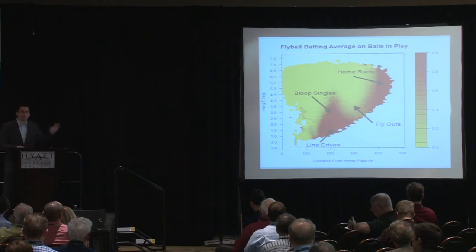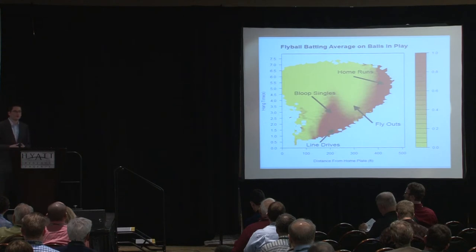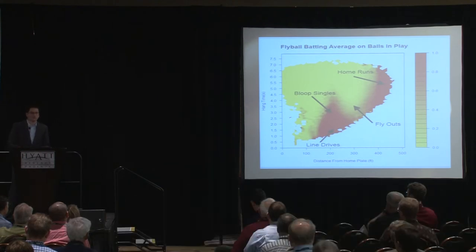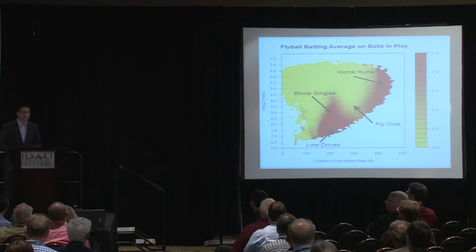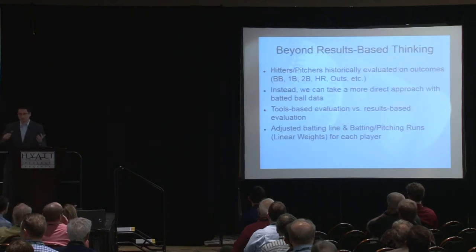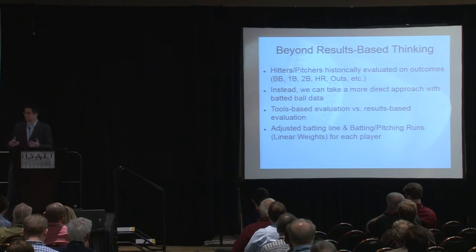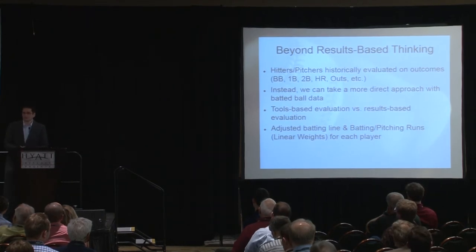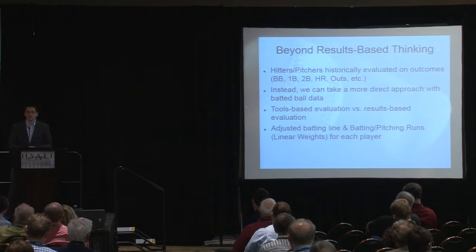The idea here is to get away from just looking at results of balls in play and instead see the whole scale of probabilities of possible outcomes for each ball in play. Rather than thinking of a play as simply a fly out or a single, we think of it as: 50% chance of being an out, 30% chance of being a single, 20% chance of being a double. We consider batted balls that way instead of just looking at outcomes.